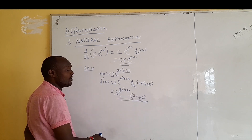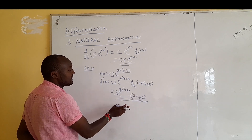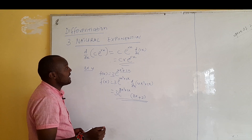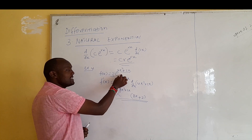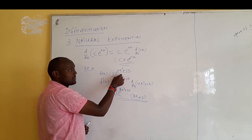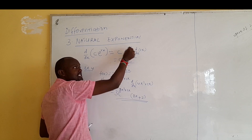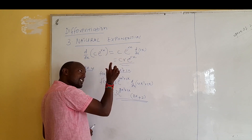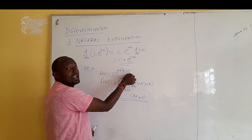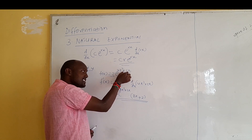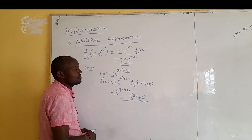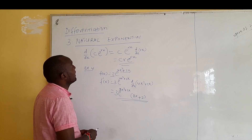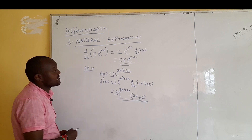To summarize: when differentiating an exponential, it remains the way it is, then you differentiate the power. Exponential 2x — you differentiate 2x. Exponential 4x²+2x — you differentiate that, then multiply with the original exponential. That's how we differentiate our natural exponential.